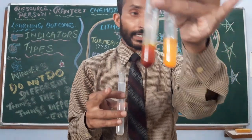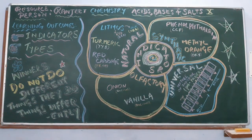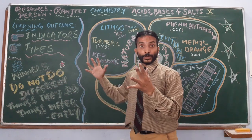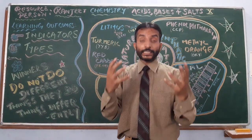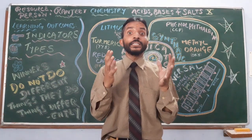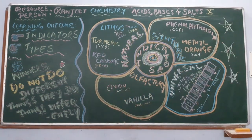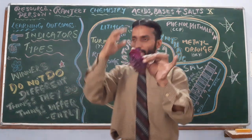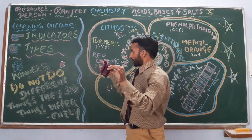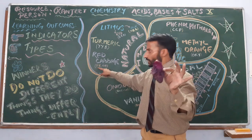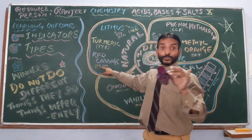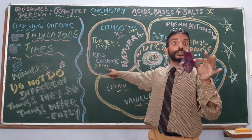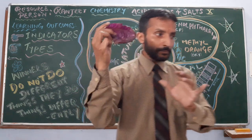This is about turmeric. Next is red cabbage — red cabbage is also a natural indicator. I will extract its juice. It is purple in nature. In acid it becomes red, and in base it becomes greenish yellow. Let us have a practical observation.